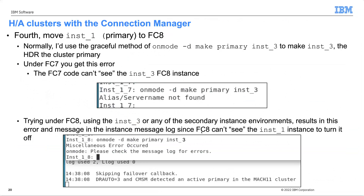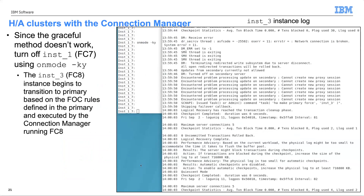Finally, it's time to migrate the primary — INST1 — and this is where it gets exciting. You can't use the normal graceful process of 'onmode -d make primary' because FC7 can't see INST3 running under FC8, and FC8 won't let you promote when it thinks there's already a primary it can't see. The only way is to shut down the primary gracefully with 'onmode -ky'.